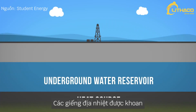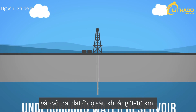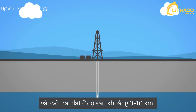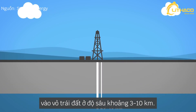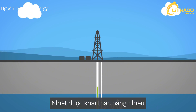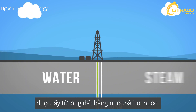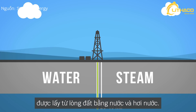Geothermal wells are drilled into the Earth's crust at approximately a depth of 3 to 10 kilometres. The heat is extracted with a variety of methods, but in most cases is drawn from the Earth using water and steam.